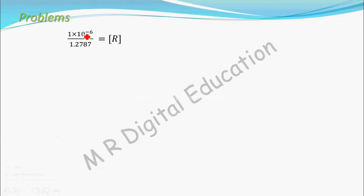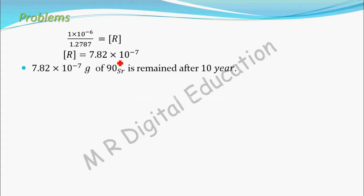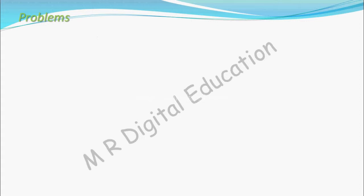So 1×10⁻⁶ divided by 1.2787 equals the concentration R. Simplifying, R equals 7.82×10⁻⁷ grams. Therefore, 7.82×10⁻⁷ grams of strontium remains in the bones after 10 years. Now let's find how much strontium remains after 60 years.